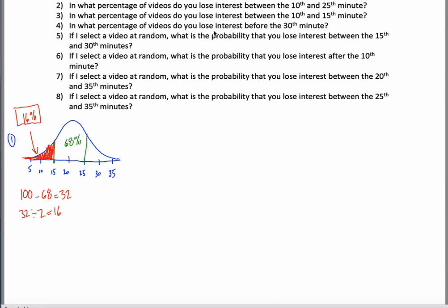Let's do it again. Second problem. In what percentage of videos do you lose interest between the 10th and 25th minute? Sounds like another picture. Another attempt at a symmetric bell-shaped distribution. 20 is still in the middle. 10 would be two standard deviations below the mean. So maybe it kind of looks like that. And 25 would be one above the mean.